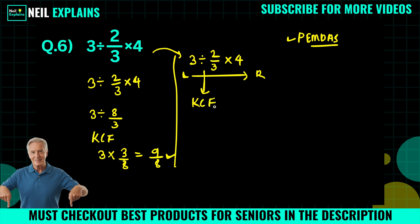This is the most convenient way. So we will keep 3 as it is, and this division is changed to multiplication, and 2/3 will be changed to 3/2, now times 4.